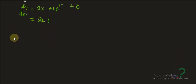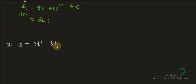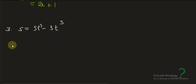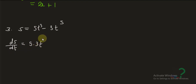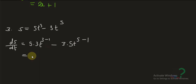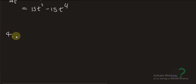Next example: s equals 5t cubed minus 3t to the fifth. So ds over dt equals 5 times 3 times t to power 3 minus 1, minus 3 times 5 times t to power 5 minus 1, which gives us 15t squared minus 15t to the fourth.